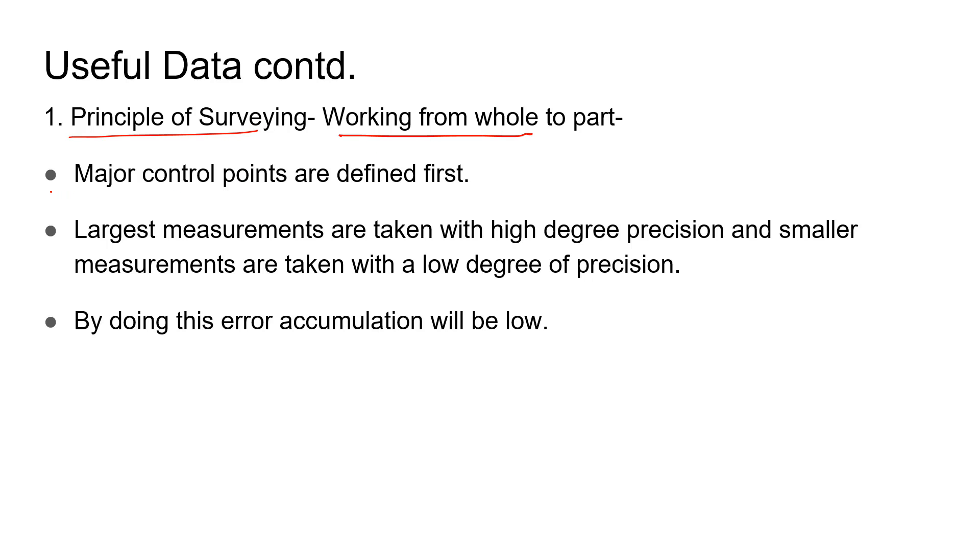Major control points are defined first. Largest measurements are taken with high degree of precision, and smaller measurements are taken with low degree of precision. If we use the working from whole to part principle, error accumulation will be very low.